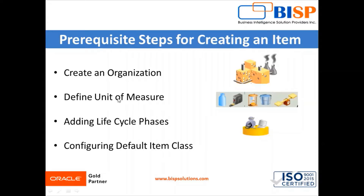The second one is unit of measures. Unit of measure is a value that specifies quantities of a particular item. Unit of measures are used in inventory management applications, product management applications, and order management applications as well, and also at the global promising level. Some unit of measures include: count, which is used for defining each; length, which defines kilometers, meters, centimeters, and inches; and time, which is used for defining days, hours, weeks, and minutes.